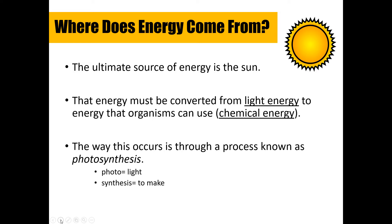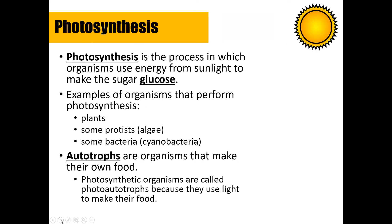Autotrophs convert light energy into chemical energy through a process known as photosynthesis. Breaking down the word: 'photo' means light, and 'synthesize' means to make — so in photosynthesis, organisms use light to make energy for themselves. What you've probably learned is that light shines on a plant, the plant gets some water, carbon dioxide comes from the atmosphere, and through photosynthesis the plant gives off oxygen and creates simple sugars such as glucose.